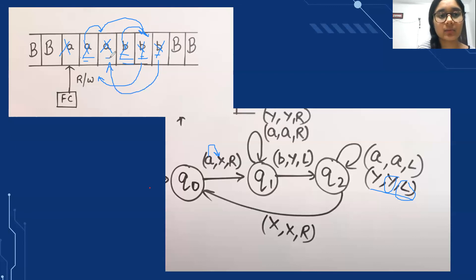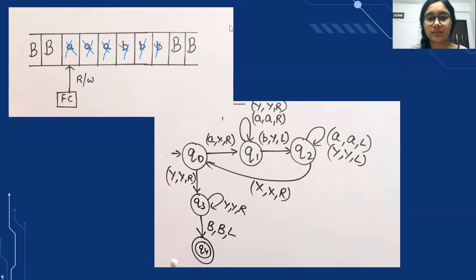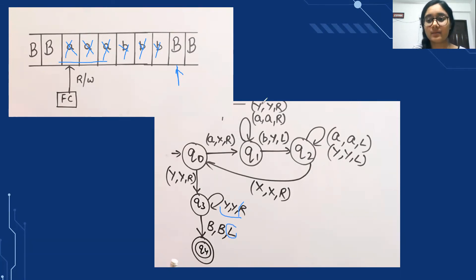After X, when the tape head encounters Y, this means the number of A's — now all replaced by X — are over. Therefore, we move to the next state keeping Y the same, and instruct the tape head to keep moving to the right. The Y's remain the same and the tape head keeps moving right until it reaches the blank. Since the number of A's is three, the number of B's is also three, and we have received our string. This is the complete design for the a^N b^N string.